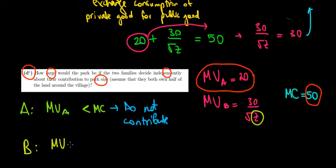He will set the marginal utility of B equal to the marginal cost, meaning that he will calculate 30 divided by square root of Z equals 50. If we solve this, then Z would equal a level of 0.36.